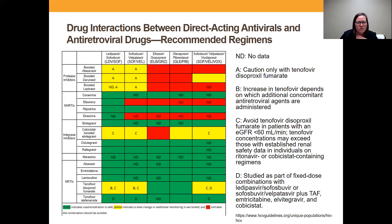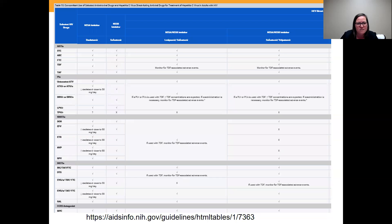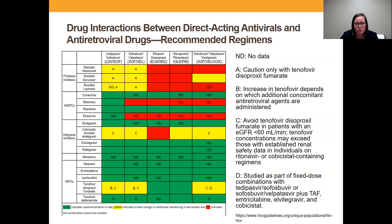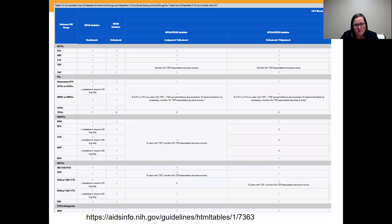The next table is from the NIH website, the AIDS Info guidelines. It has check marks if you can use a combination. On the website at that link included, you'll be able to see it better. I just wanted to show the difference between the two different guideline websites and how you might use them to select medications.